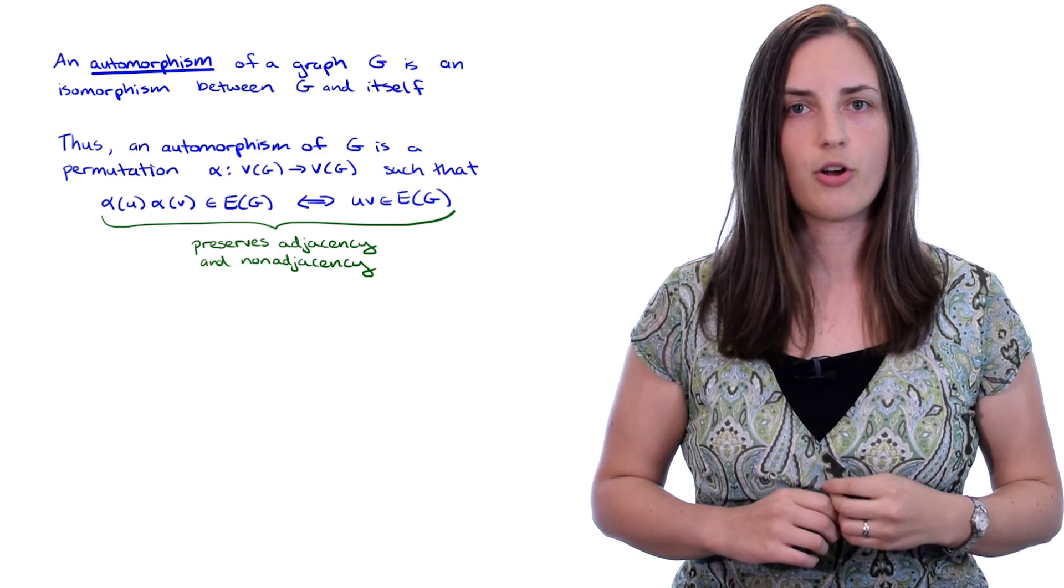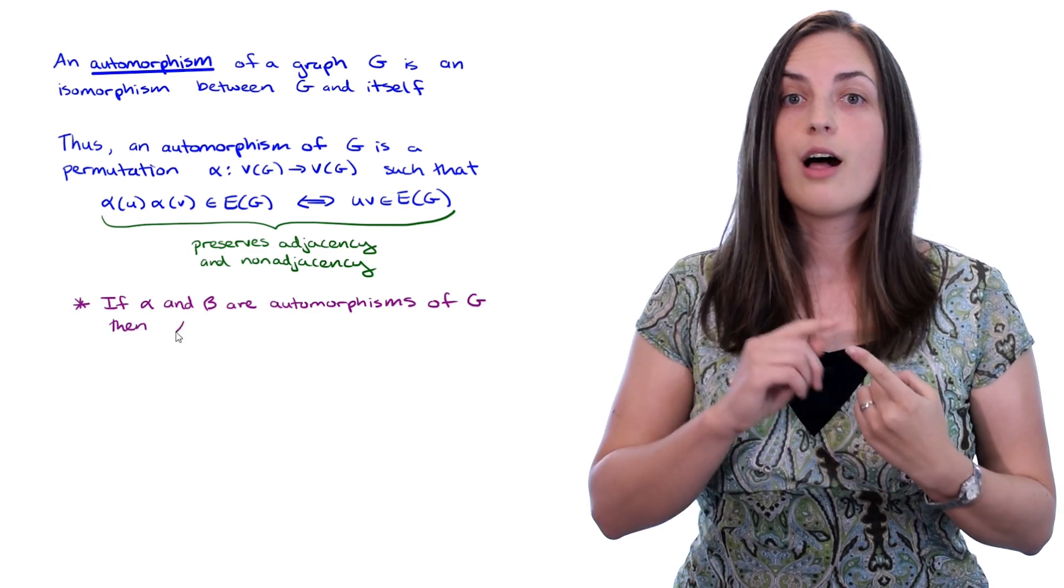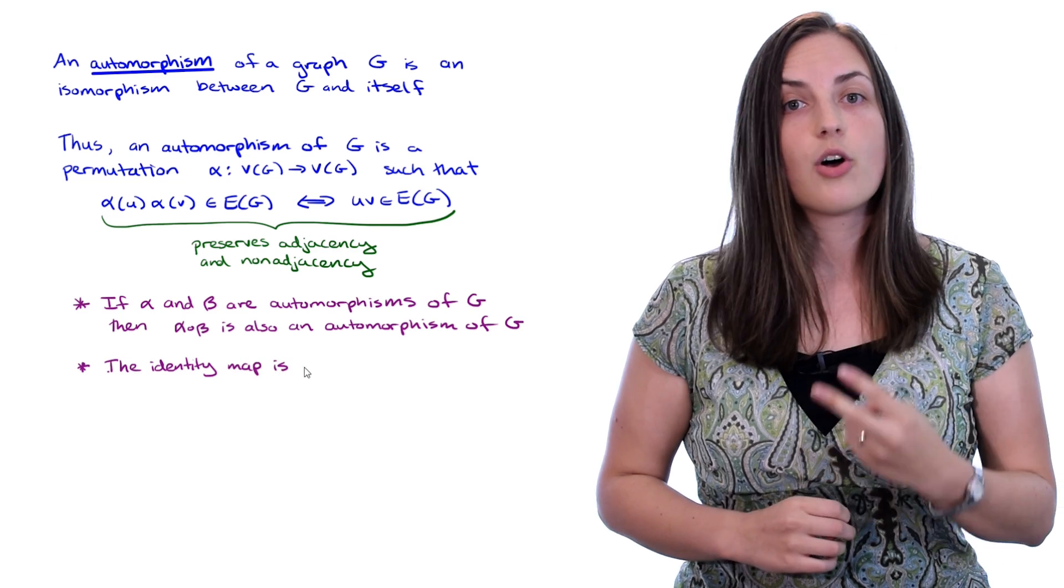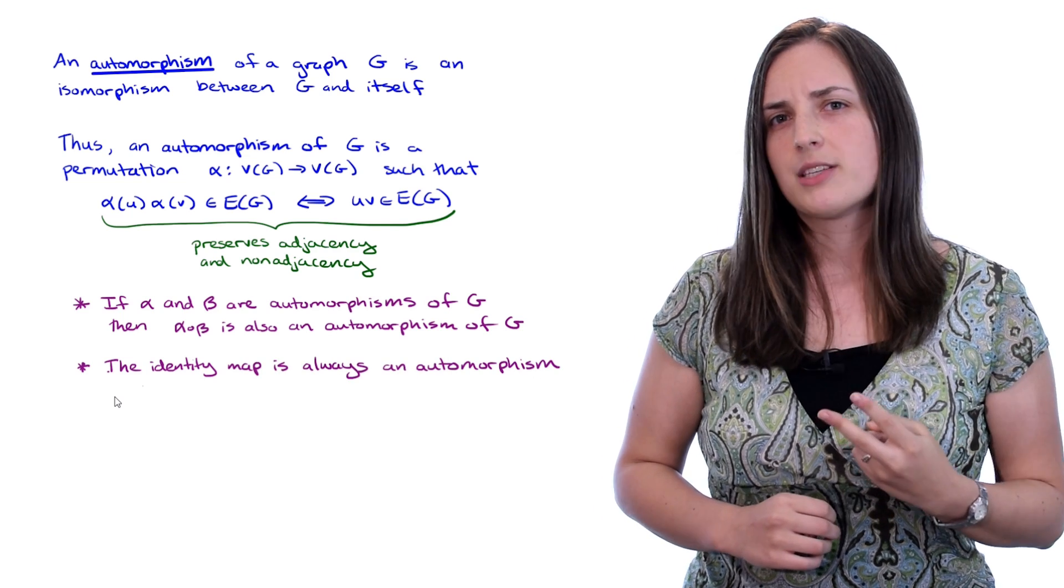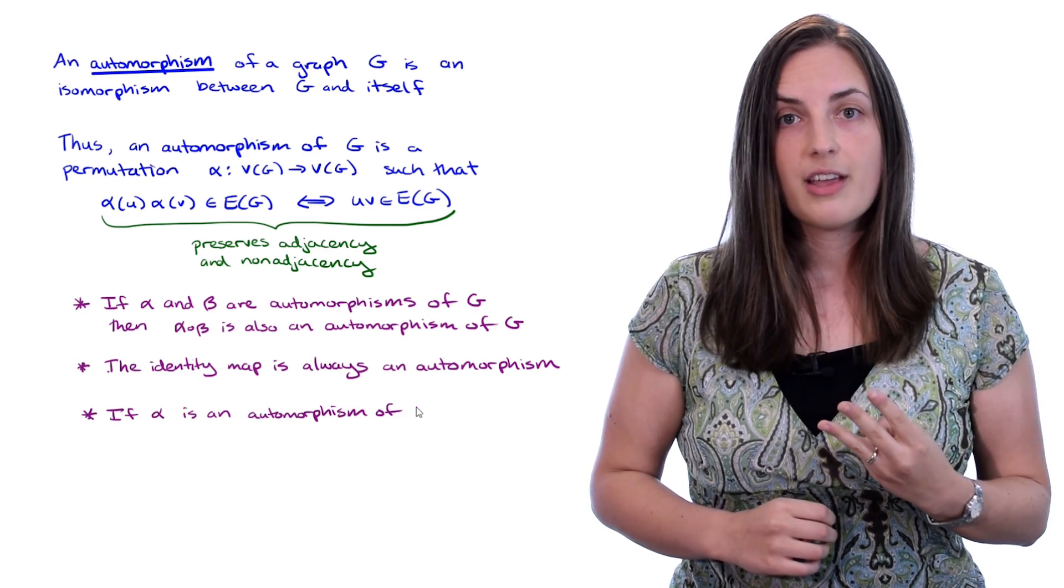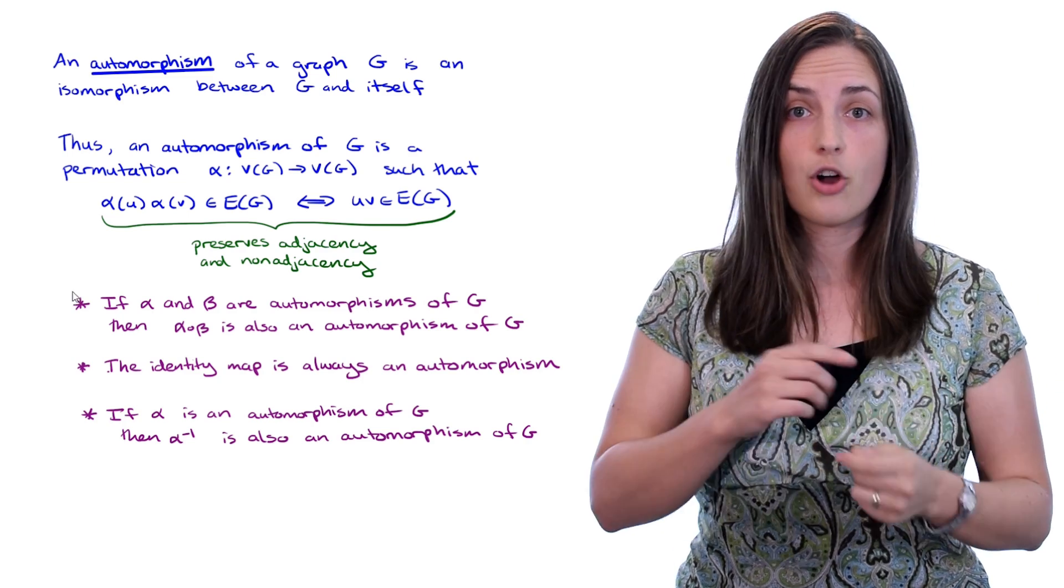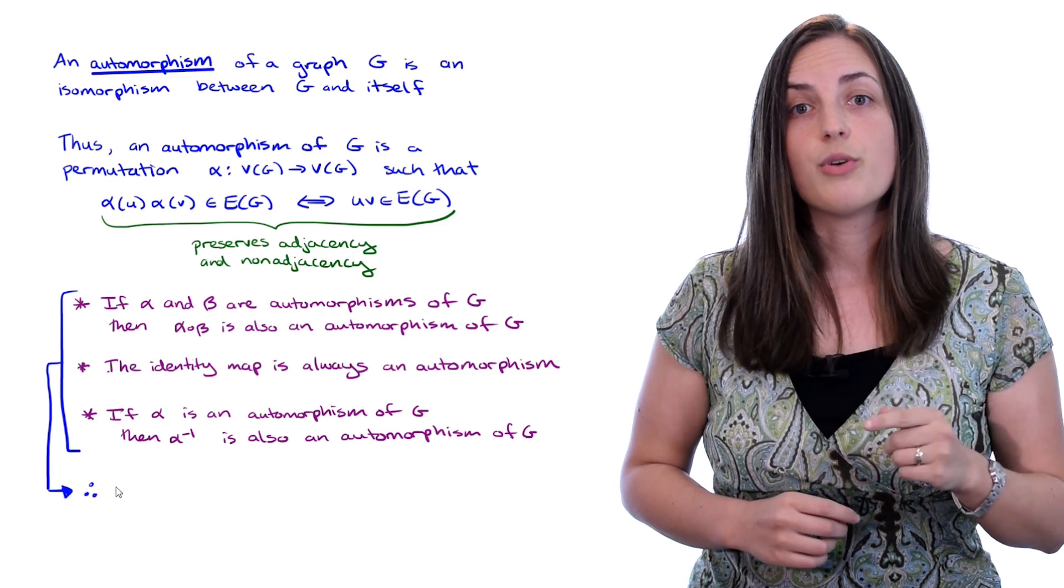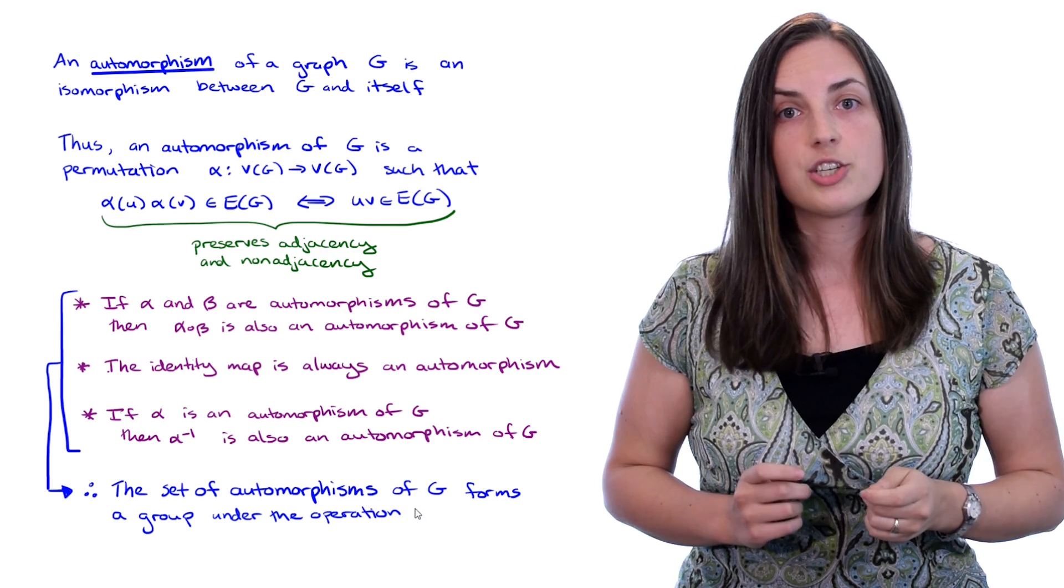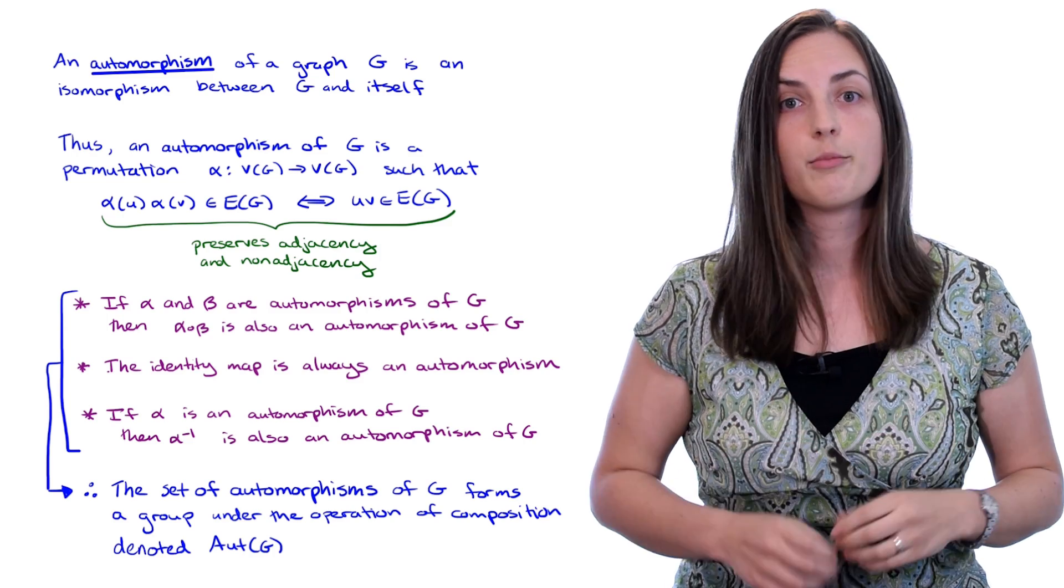Here are some important facts about automorphisms. 1. If alpha and beta are both automorphisms of a graph, then alpha composed with beta is also an automorphism of that graph. 2. The identity map is always an automorphism of a graph. The identity map is what fixes every vertex. 3. If alpha is an automorphism of a graph, then alpha inverse is also an automorphism of a graph. These three facts, together with the fact that composition of permutations is associative, tells you that the set of all automorphisms of a graph forms a group under the operation of composition. And this group is denoted by the notation Aut(G), for the automorphism group of G.